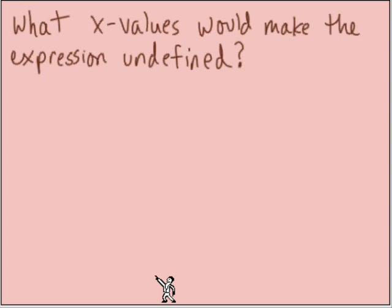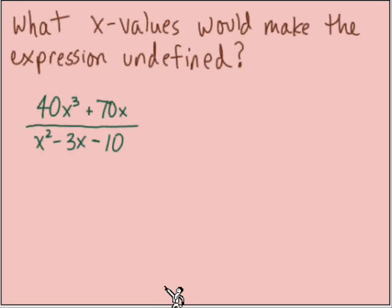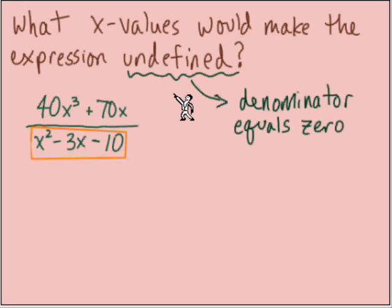Let's go for another example of this idea. So the question is, what x values would make this expression undefined: 40x to the third plus 70x over x squared minus 3x minus 10? When we're dealing with rational expressions and the question comes up of making an expression undefined, you can say very safely that the question is, how would the denominator equal 0? We're only talking about the denominator. This numerator, it's not coming into play. Making an expression undefined means to us, how is this denominator equal to 0?